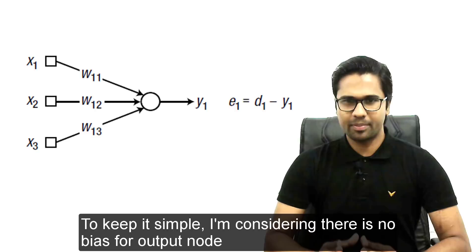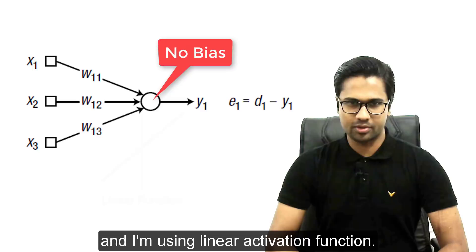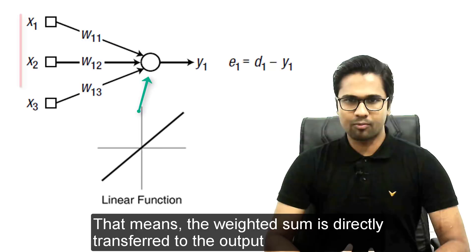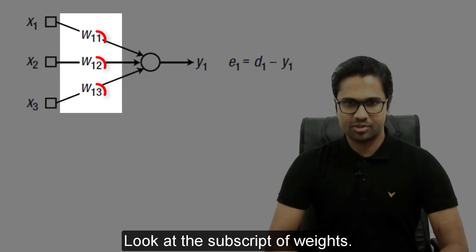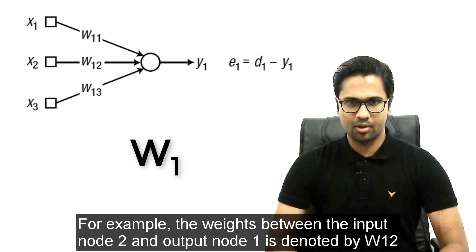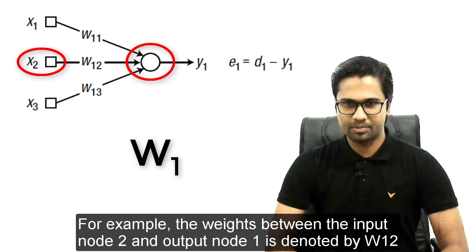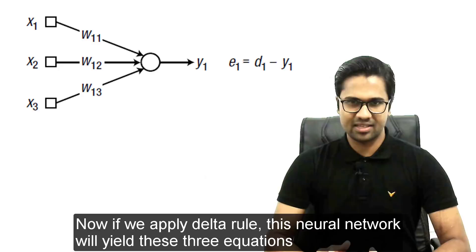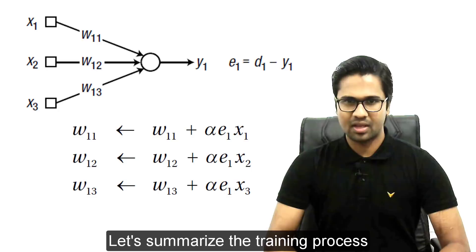Let's take an example. To keep it simple, there is no bias for the output node and we use a linear activation function, meaning the weighted sum is directly transferred to the output. Looking at the subscripts of weights: the first digit represents the node number to which the input enters. For example, the weight between input node 2 and node 1 is denoted W12. Applying the delta rule, this neural network yields three equations.